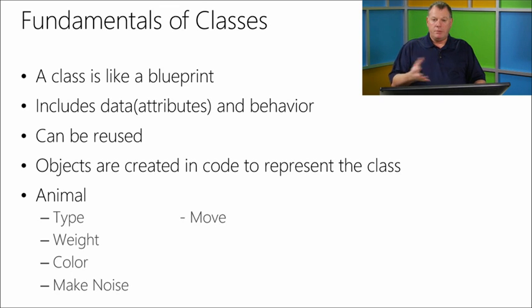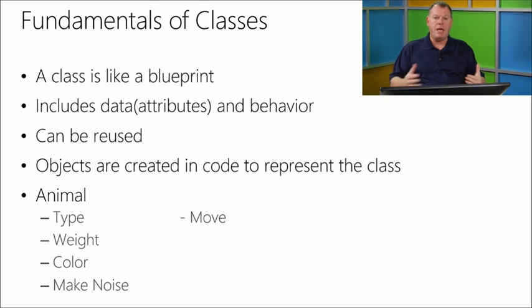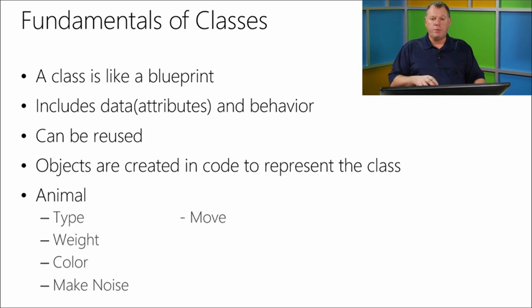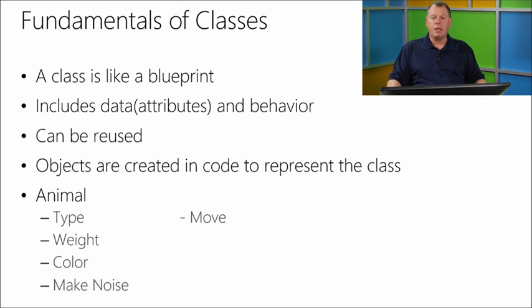We also have items called make noise and move — examples of the behavior of the animal class. Animals can make a noise: a cat's going to meow, a dog's going to bark. And animals are not typically going to stand in one spot, so they have the ability to move. You can probably come up with a lot of other behavior patterns that an animal could do, like eating. We're just going to keep it simple to allow you to gain a good understanding of what a class and an object is through simple implementations.